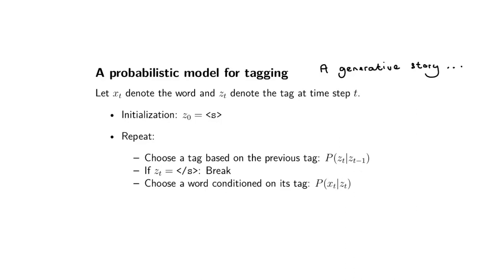Then, given the specific tag I've sampled, I'm going to sample a word given that I have that specific part of speech category. Then I go and sample a new tag given the previous one, and given that new sampled tag I generate another word. I continue like this until I sample a tag called the end-of-sentence symbol, and then I've stopped. Now, what do I need to run this? I'll need to know the words in my language and the different parts of speech.